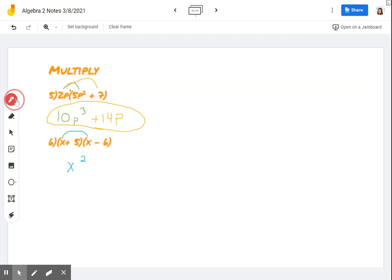So x times x is x squared. x times negative 6 is negative 6x. Let's see. Next one is now 5. The 5 has to get distributed. So 5 times x, 5x. Notice that I'm putting all my linear terms underneath each other. It makes it easier for me to combine like terms in the end.